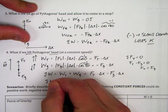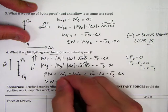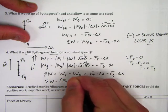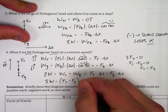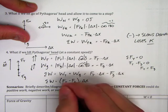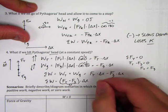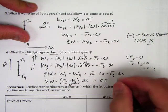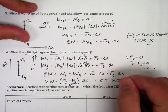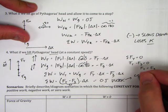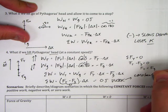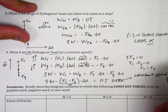So we factor out the delta X, and we have FT minus FG times delta X. And again, since these are equal and opposite, this is zero. So zero joules of work, meaning we maintain a constant speed. And there's no kinetic energy increase.